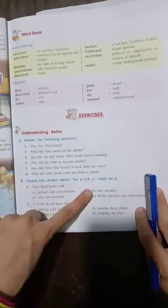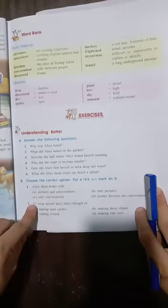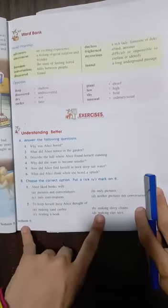But you have to do the exercise number B. Choose the correct option. Put a tick mark on it. You have to write it in your copy using black and blue pen. Whatever your correct option is, you have to tick mark it.